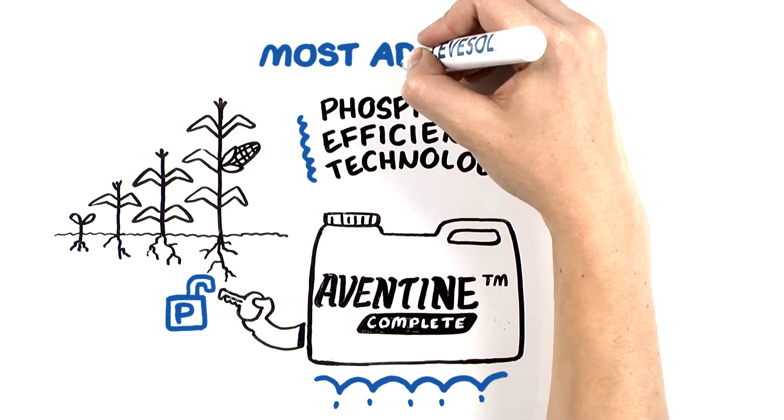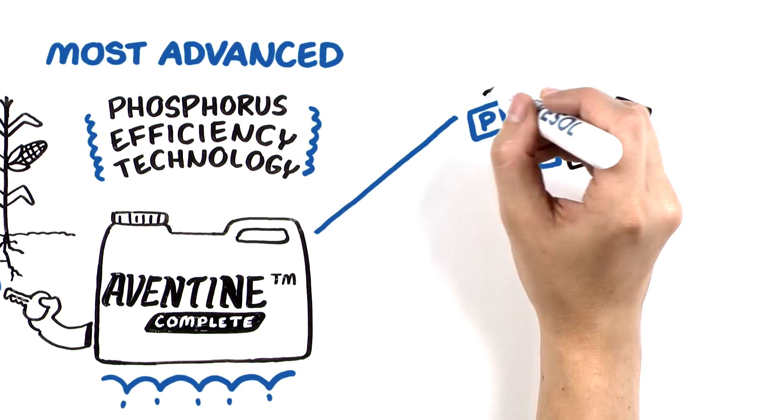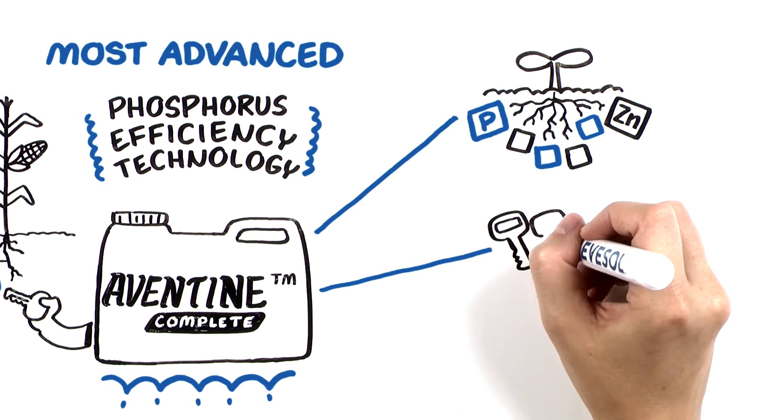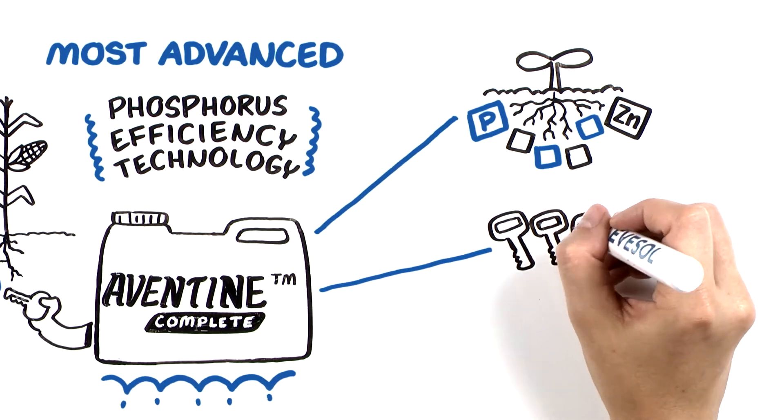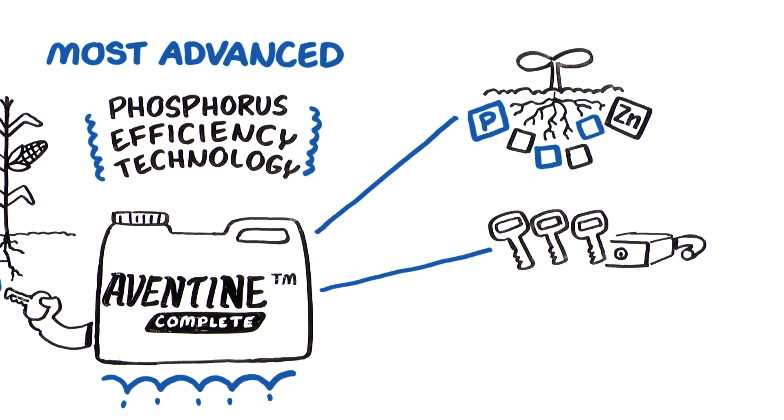Levisol is the most advanced nutrient efficiency solution, making phosphorus, zinc, and other key micronutrients more available to the plant. With three modes of action, it unlocks the nutrients in the soil, it makes the nutrients that it's applied with more available, and it is mobile in the plant for season-long activity.